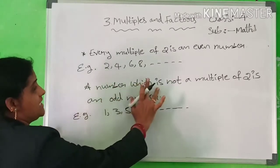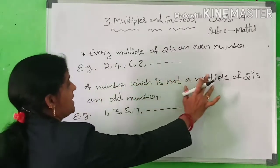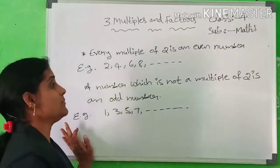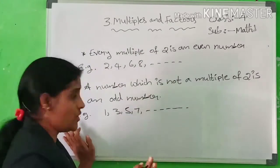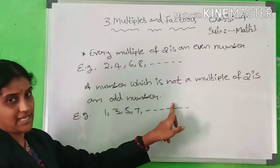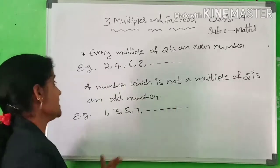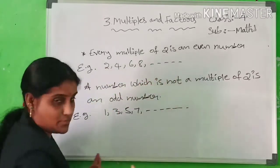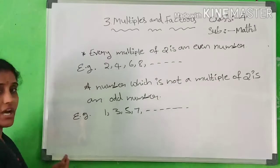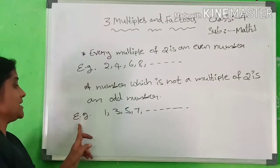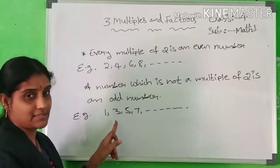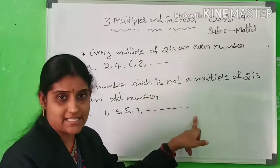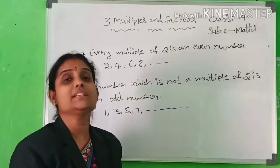A number which is not a multiple of 2 is an odd number. For example, 1, 3, 5, 7, etc. Note this one.